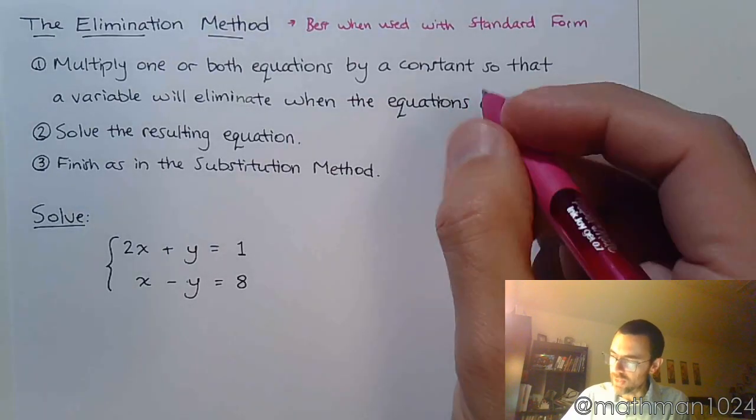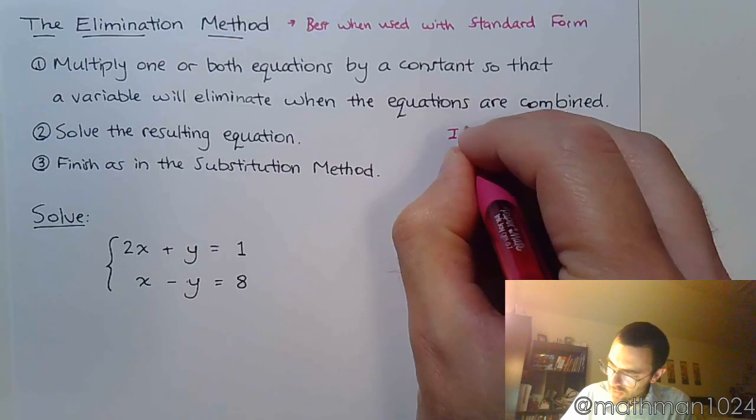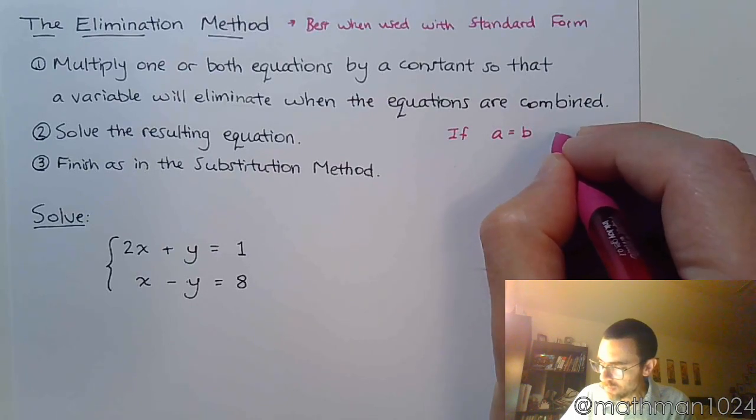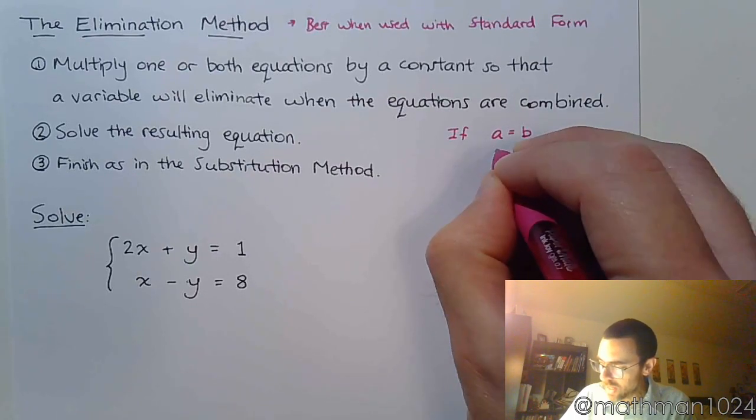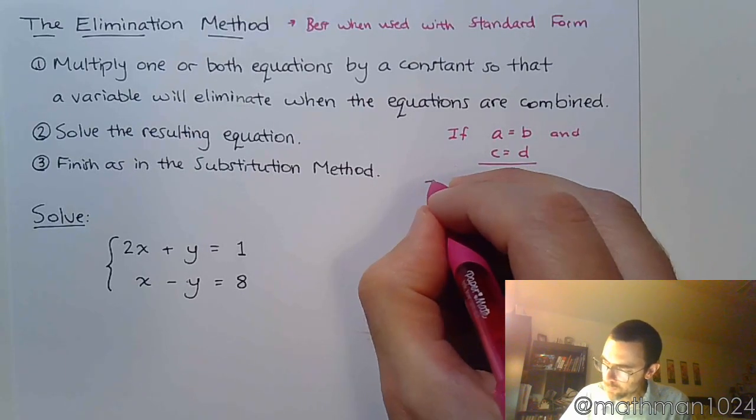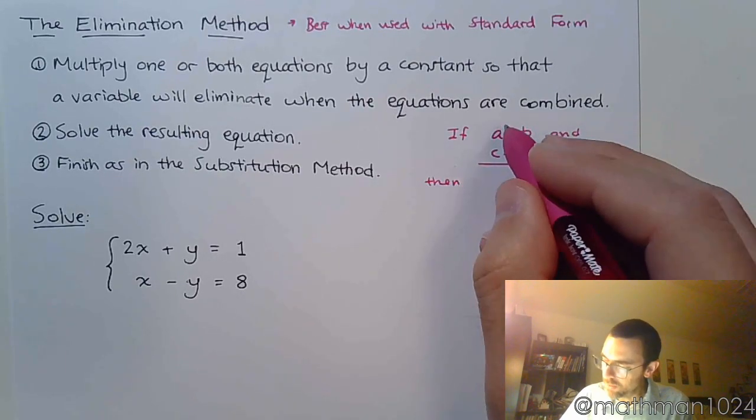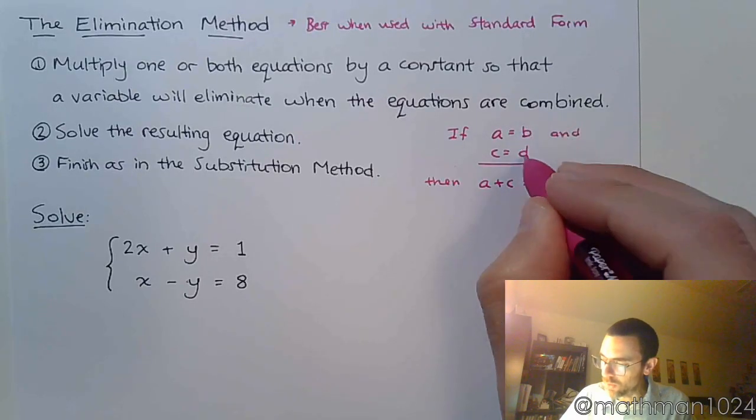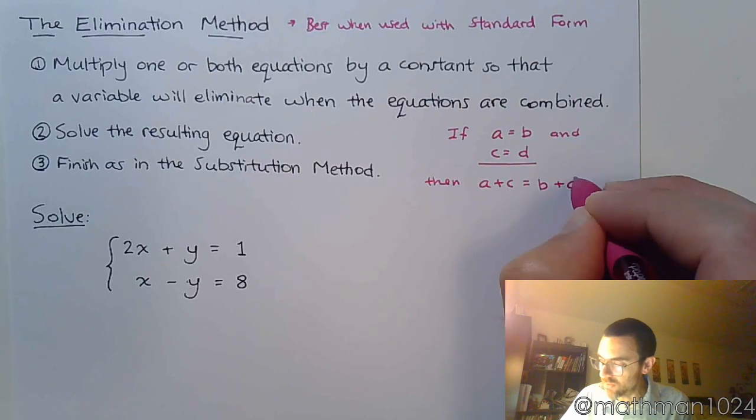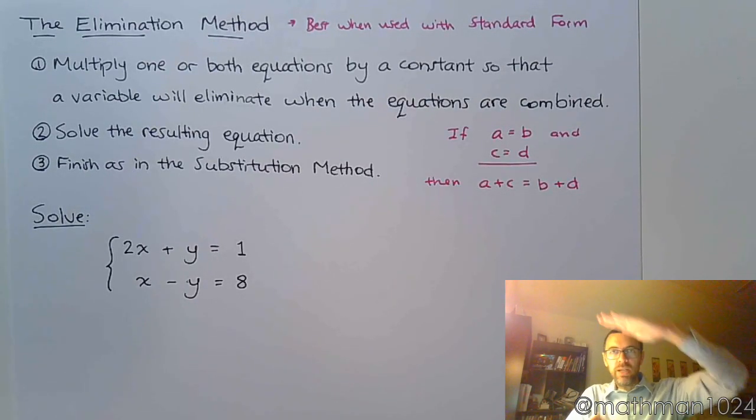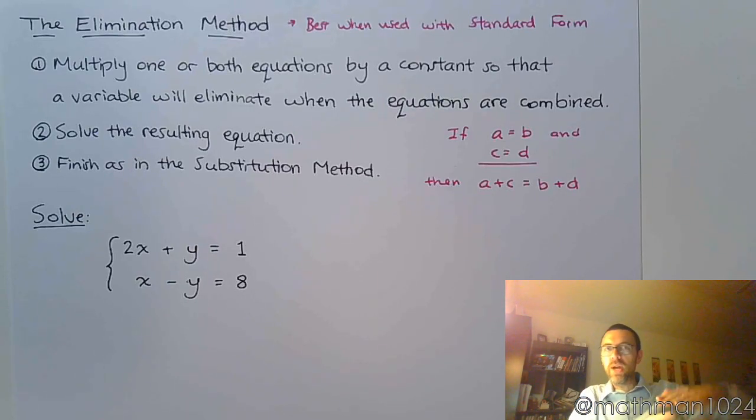So what's really going on is this. We're saying that when you have two equations, so if a equals b and c equals d, then if you combine everything here on the left, a plus c, that's going to equal the sum of the pieces that you have on the right sides of the equations. And so that's what the elimination method is. You just combine everything on the left, you combine everything on the right, and hopefully you get something to go away.